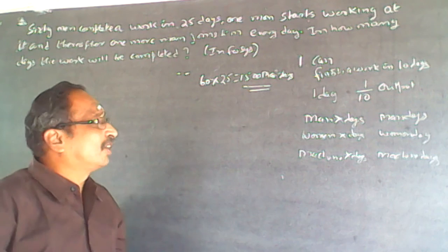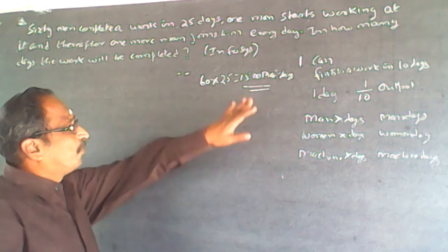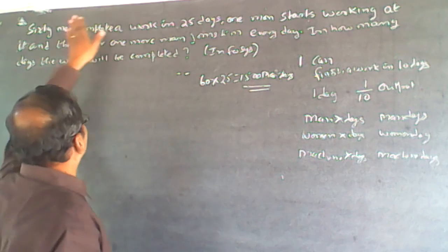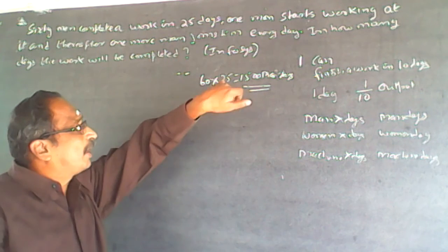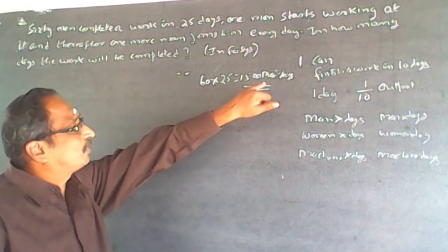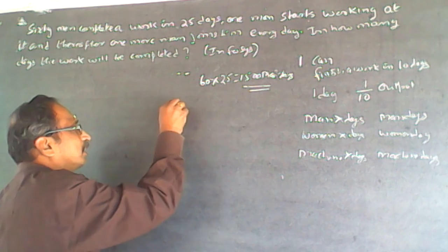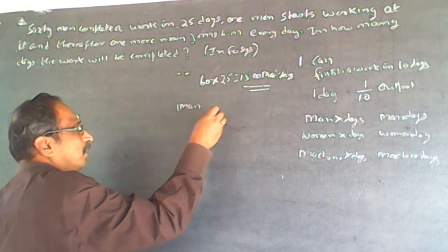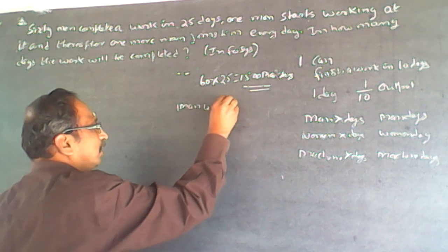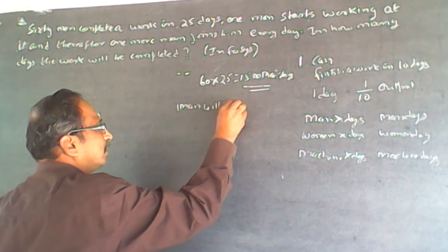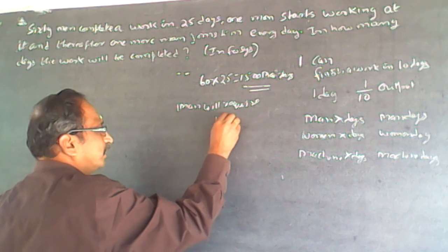1500 man-days of work is required to complete the work. Because 60 people are working equally, one man will require 1500 days to complete the entire work.